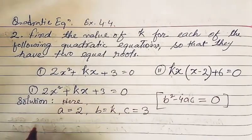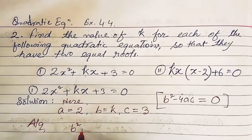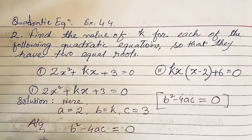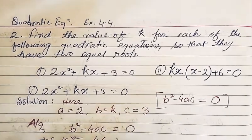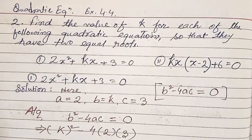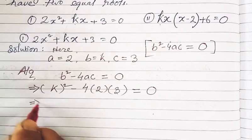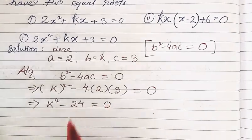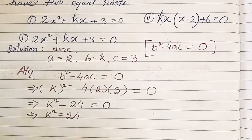According to the question, the equation has two equal roots, so b² - 4ac = 0. Substituting the values: K² - 4 × 2 × 3 = 0, which gives K² - 24 = 0, so K² = 24.